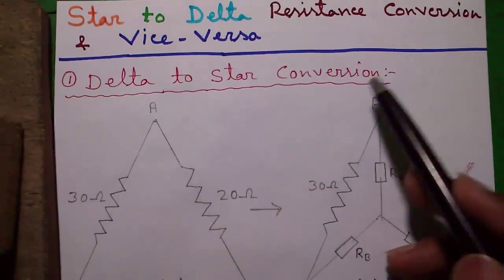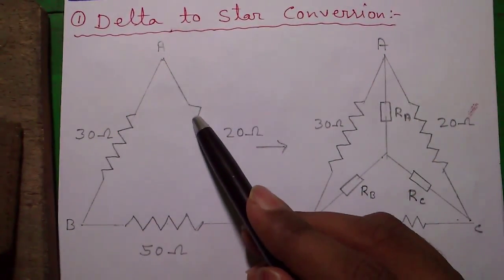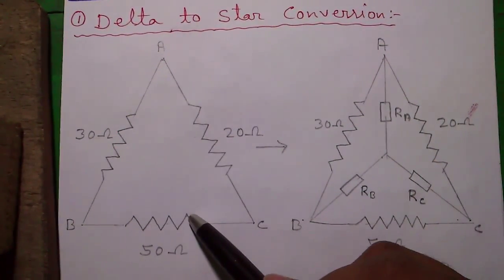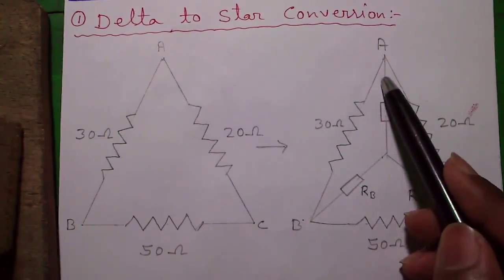First the delta to star connection. So here delta connection of three resistances are given and we have to convert it to equivalent star connection.